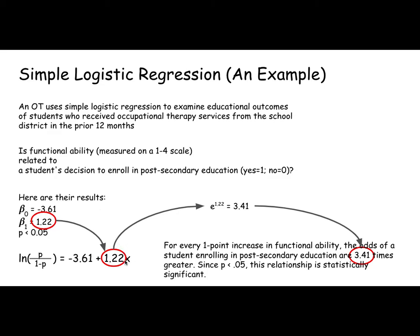So this x variable here, that's the functional ability, so that's going to be one, two, three, or four. And the outcome, that's did they go to college? And they do the study and they come up with a beta one of 1.22 and a p value less than 0.05. So we're reasonably sure this is, we're 95% sure this is not zero.